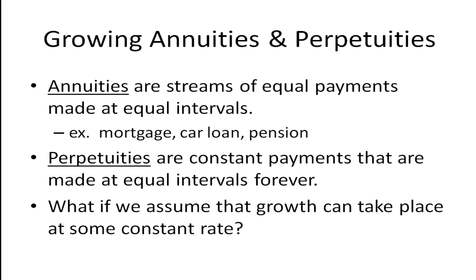I've also discussed in previous videos the concept of a perpetuity. This is the case where you receive a constant payment forever. Now what happens if we assume that growth can take place at some constant rate? How can we modify these two models?